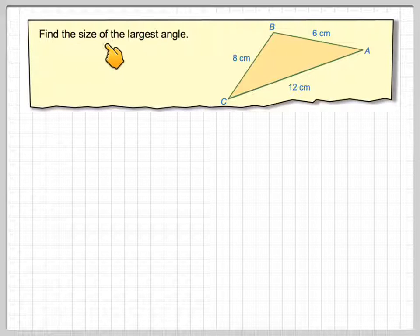Okay, the question is, find the size of the largest angle. Now, if you look at a triangle, the largest angle is always opposite the largest side.